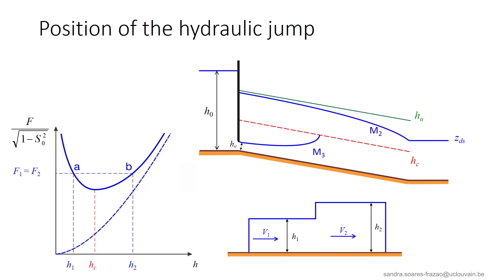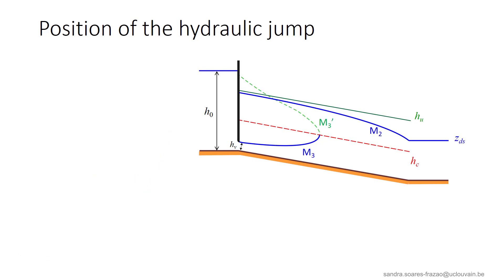we have to find the position where h1 and h2 are such that F1 equals F2. To do this, if we consider that the M3 profile is the locus of all possible h1 depths, we can, for each point of the M3 profile, calculate the corresponding sequent depth h2. This yields the sequent profile, illustrated here by the green dashed line.